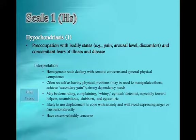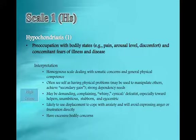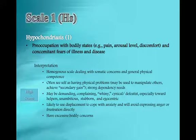Scale number one is the hypochondriasis scale. We're looking at measuring and trying to understand people's understanding of their body and how it relates to their states of pain or discomfort, or their understanding of illness and disease. The MMPI is mostly looking at measuring chronic or enduring or persistent kinds of processes. So the hypochondriasis scale is looking at more of a long-term understanding of how the client relates to their body, the physical world, and their sense of pain.